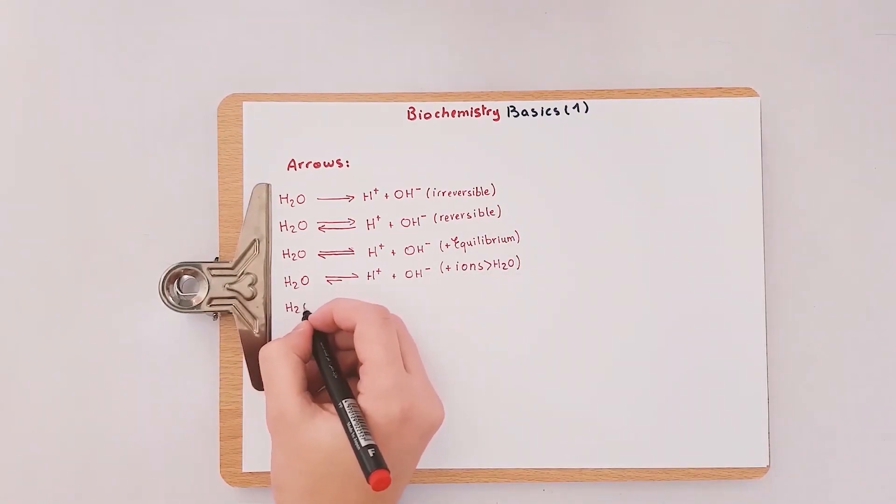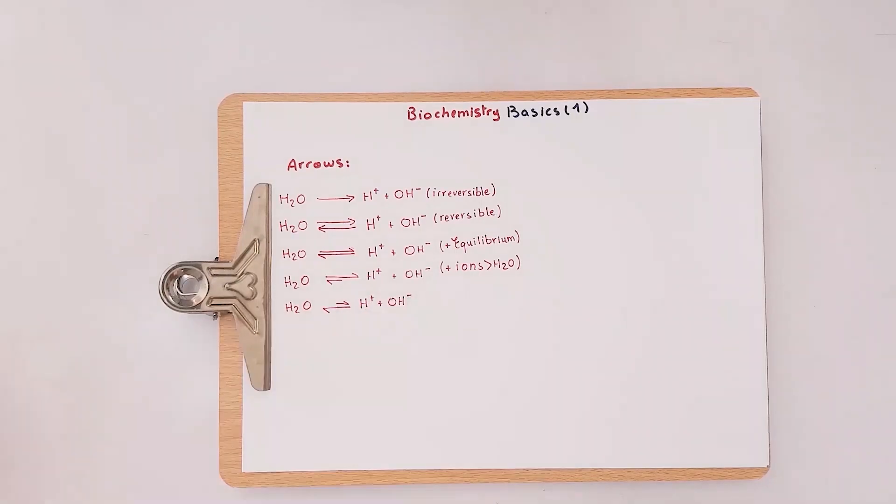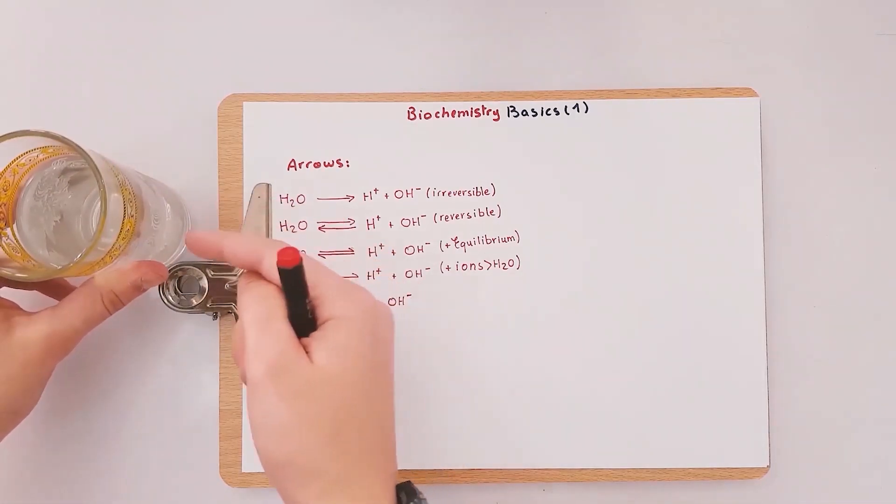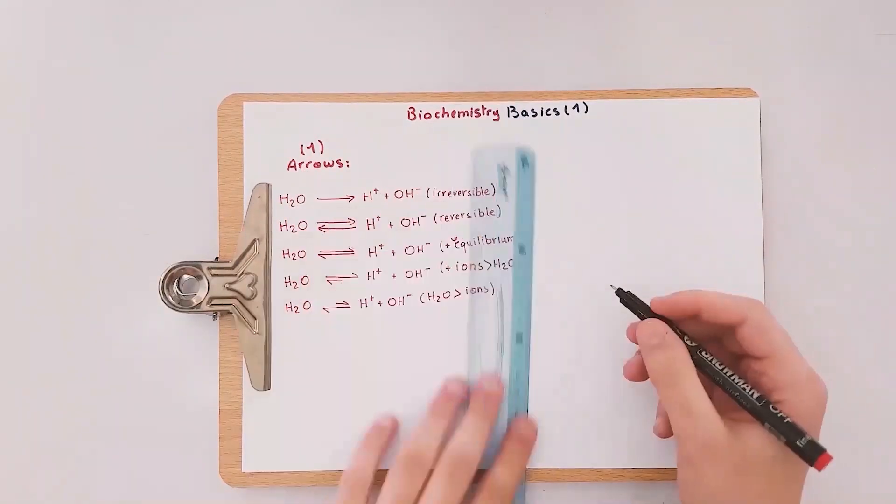Finally, the fifth arrow: the arrow heading toward the water molecules is longer than the opposite one, and this is the reality that truly exists inside this cup of water. The second crucial thing worth mentioning is the chemical bonds.